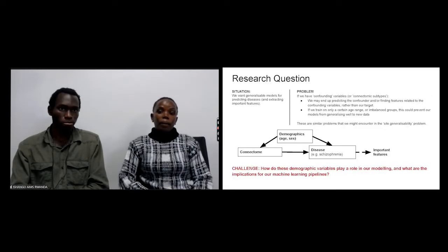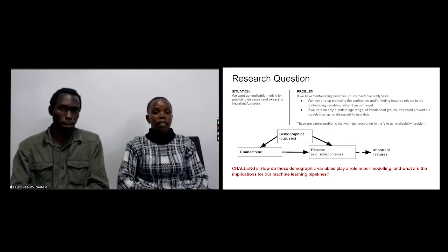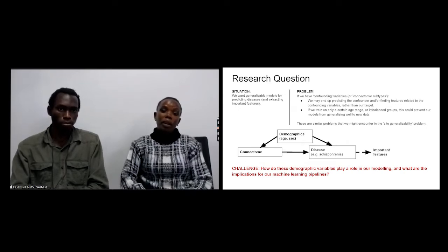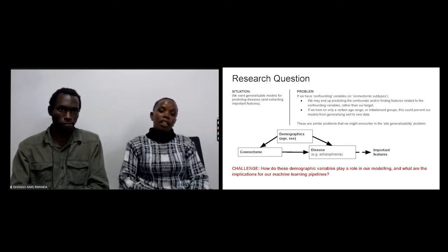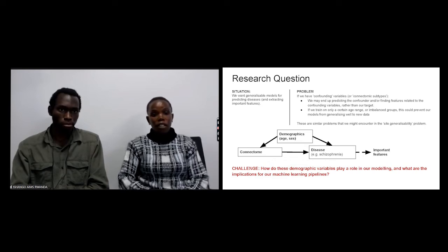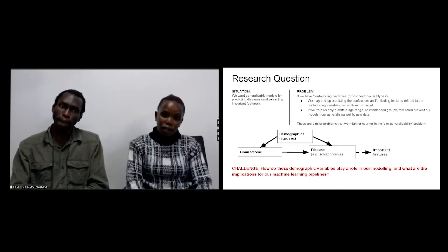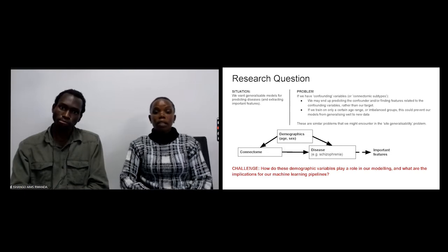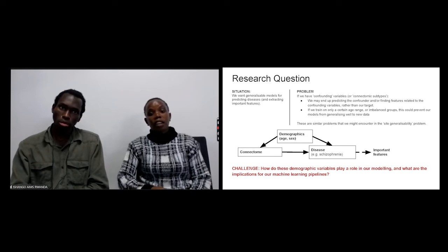What we're trying to do in this work is to use connectomics to predict disease, schizophrenia in our case, and from there we're able to identify features, mostly features that are contributing to our prediction. On the other side, you have demographic features which, from the literature review, are confounding both connectomics and disease.